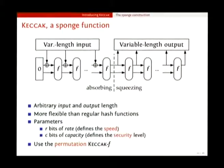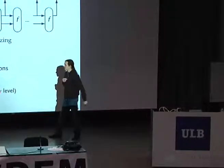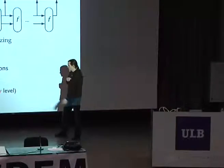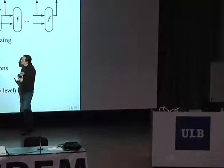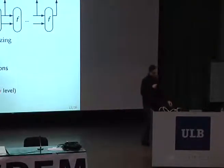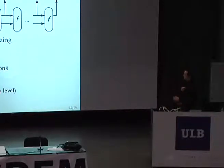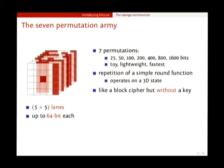In the process, you see that we have an initial state, and then you have some bits going through. You can select the width of this data path. There are two names: the rate, which basically defines the speed of the function, and the capacity, which defines the level of security you can achieve. And the F — that's actually a permutation that we call Keccak-F. In Keccak, we have seven permutations, and these permutations have different widths.